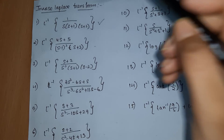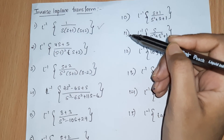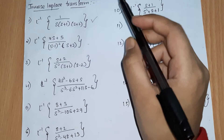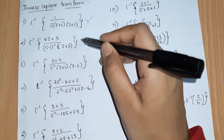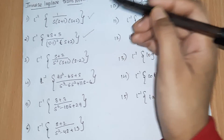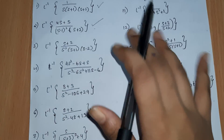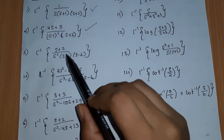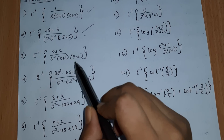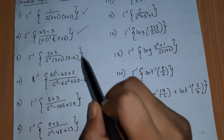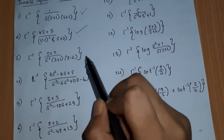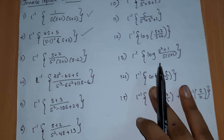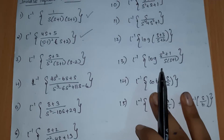Welcome back to my channel. In this video we are going to discuss the third problem. In the previous video we completed the second problem. The third problem is L inverse of (s+2) divided by s squared times (s+1) times (s-2). Let's begin and solve the problem.